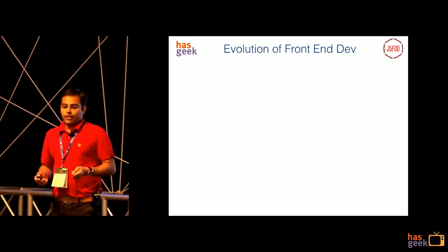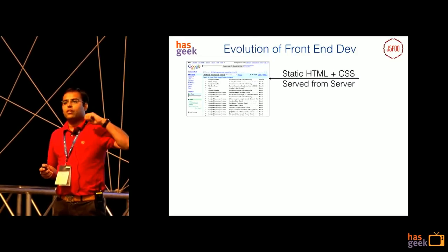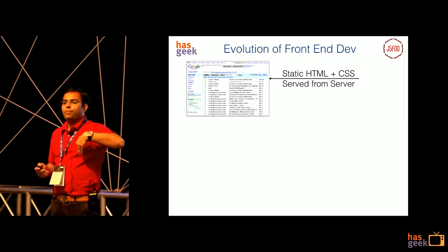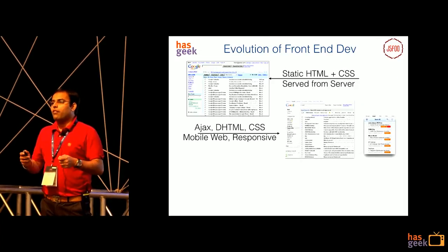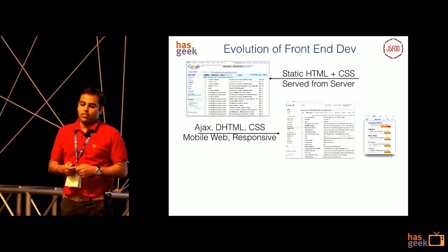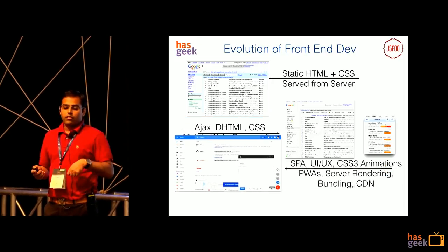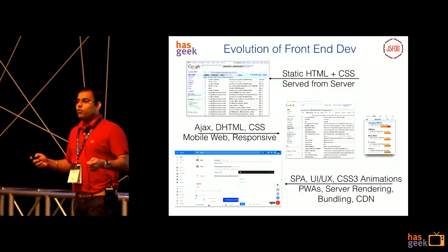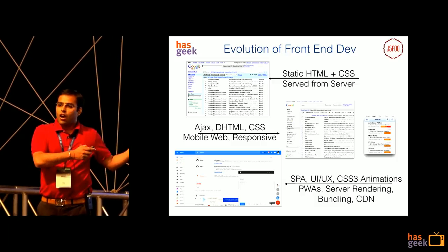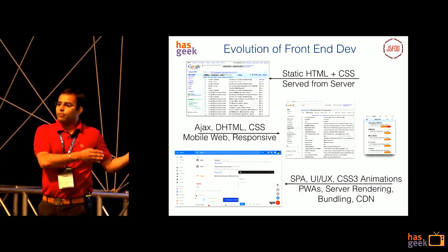Starting off, how has the evolution of frontend dev been? There were very static HTML websites, we could see websites which went to the server, the response came back, and you could see a white blank screen — which was not at all a great user experience. The second era was of Ajax, DHTML, a lot of animations, mobile web started to come up. And then the era in which we are currently: era of single page apps, era of CSS3 animations, era of PWA, server rendering and all that stuff.